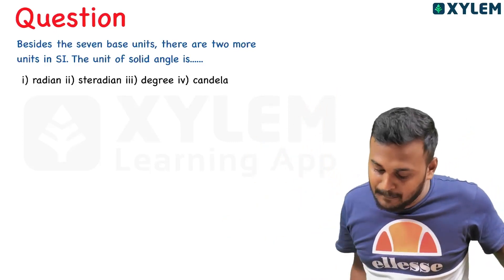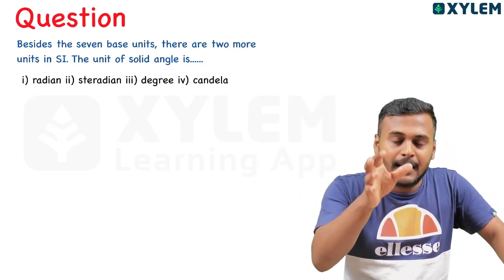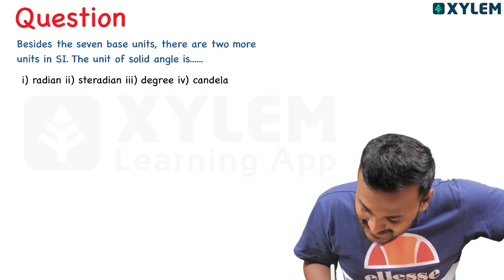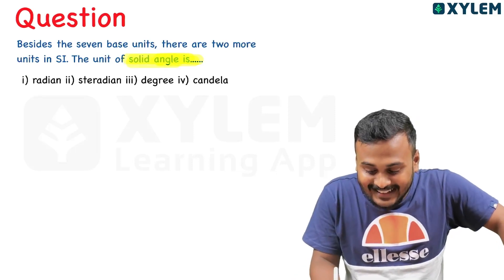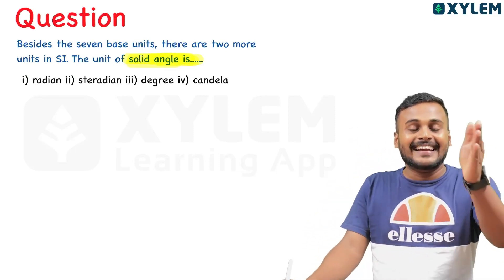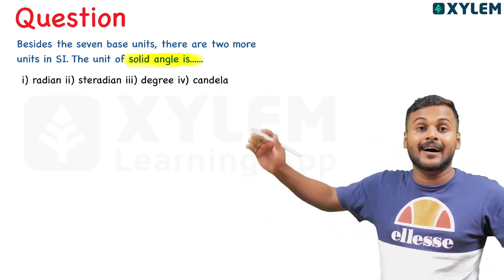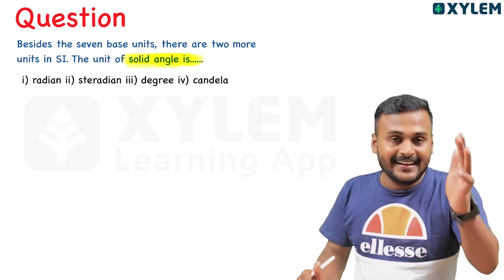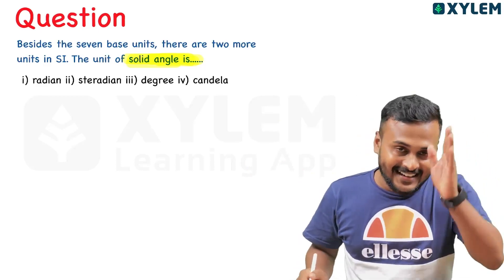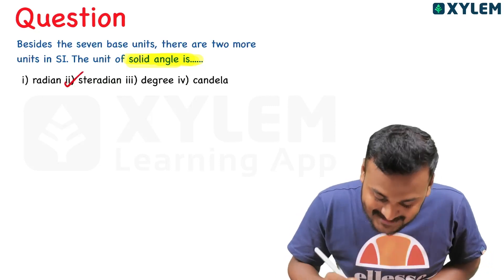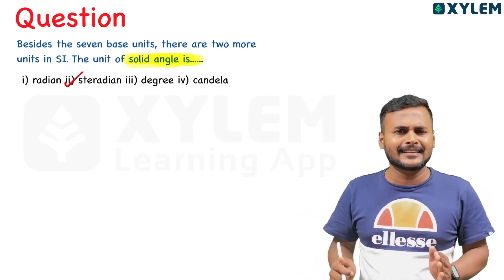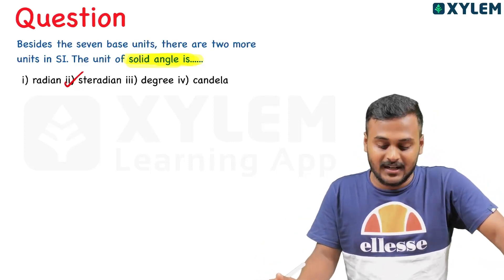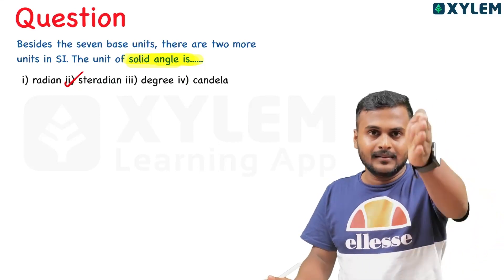Besides the seven base units, there are two more supplementary SI units. The unit of solid angle is — what is it? The options are: Radian, Steradian, Diggering, Canceling. The right answer is B — that is Steradian. Clear.